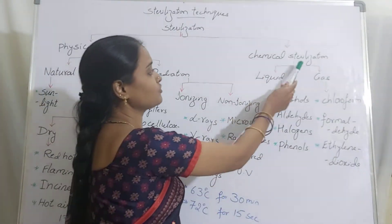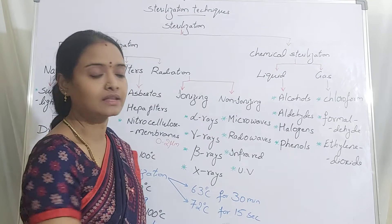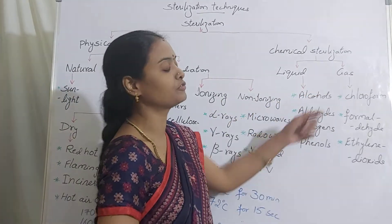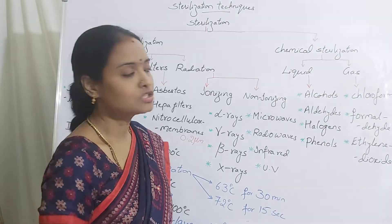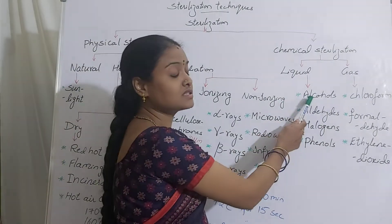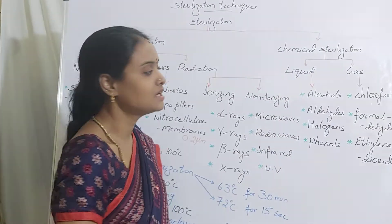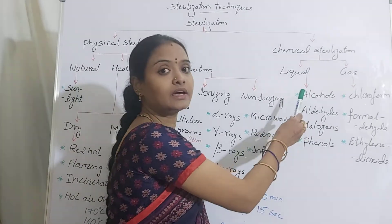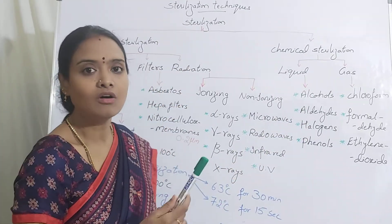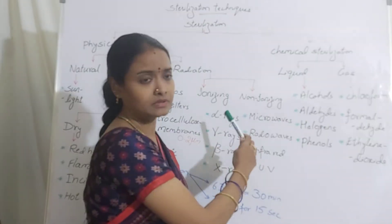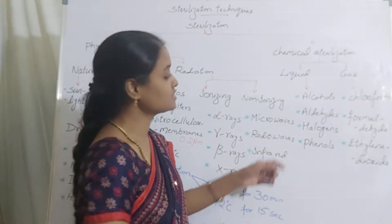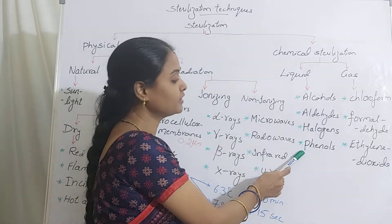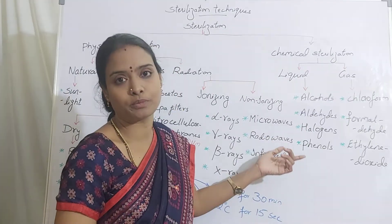In chemical sterilization, the chemical can be in the form of liquid or gas. The most commonly used liquid in the lab is 70% ethanol, used for surface sterilization and other purposes. Other liquid chemicals include aldehydes, halogens, phenols, and other compounds.